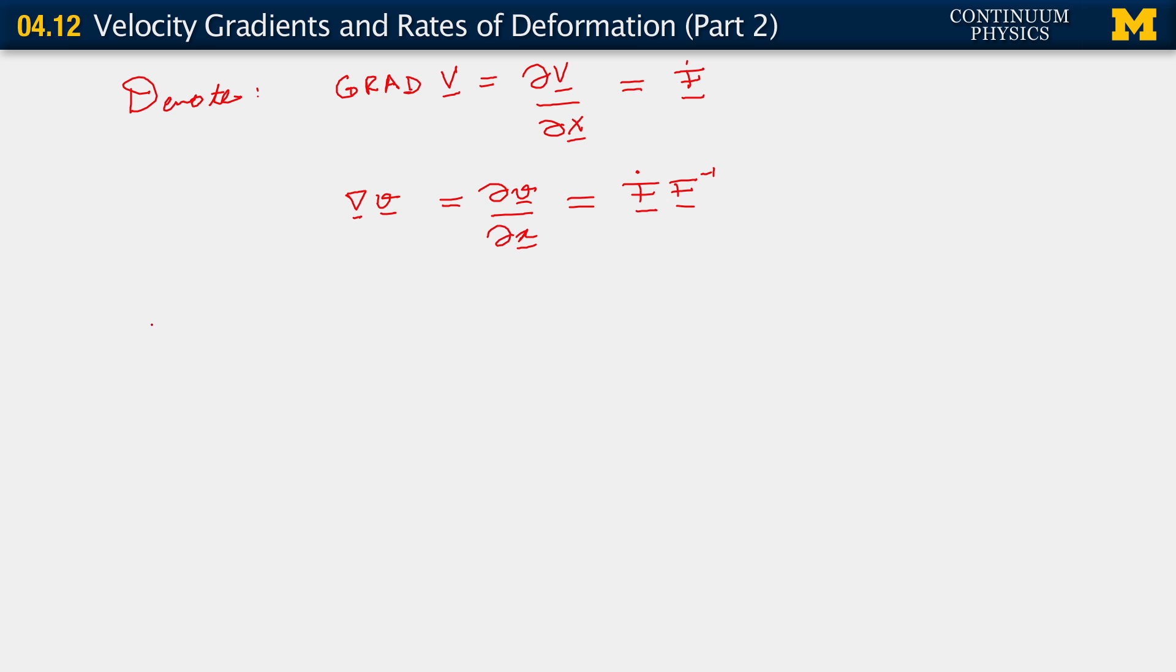Coordinate notation. Let's go with the material velocity gradient first. Here we're going to write partial of v little i with respect to x j. When things work out, this thing is just F-dot little i capital J. And this derivative is just F-dot little i j F-inverse capital J little j.